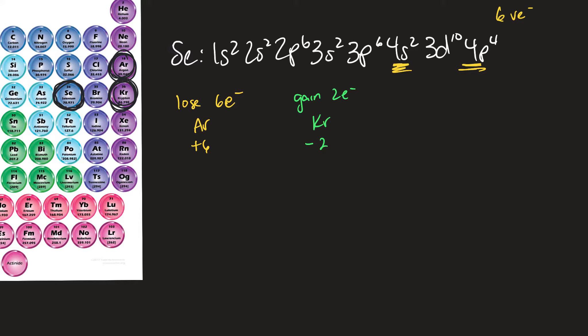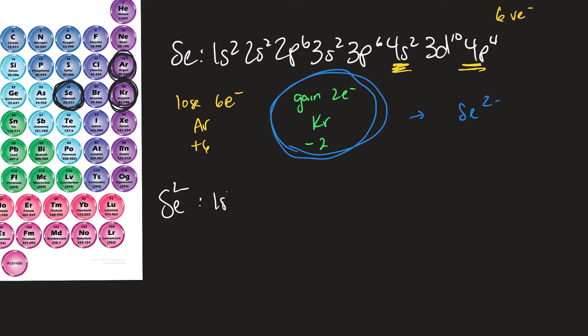Atoms like to transfer the least amount of electrons, so it's easier for selenium to gain 2 more electrons. Selenium will therefore be a negative-two charge. The electron configuration of the selenium 2-minus ion is 1s2, 2s2, 2p6, 3s2, 3p6, 4s2, 3d10, 4p6.